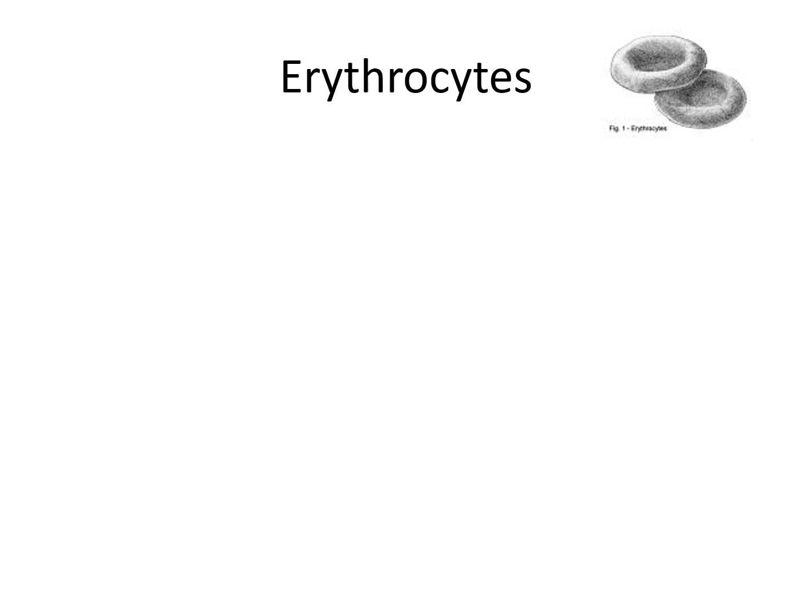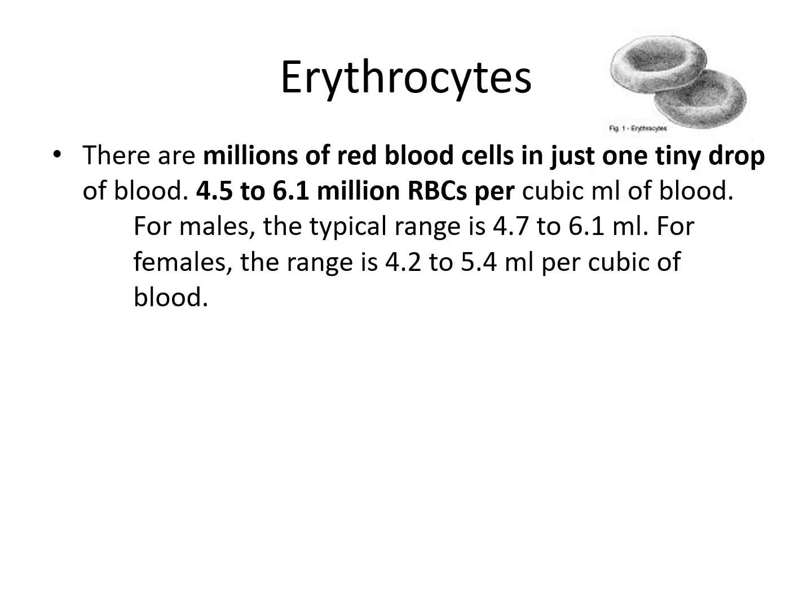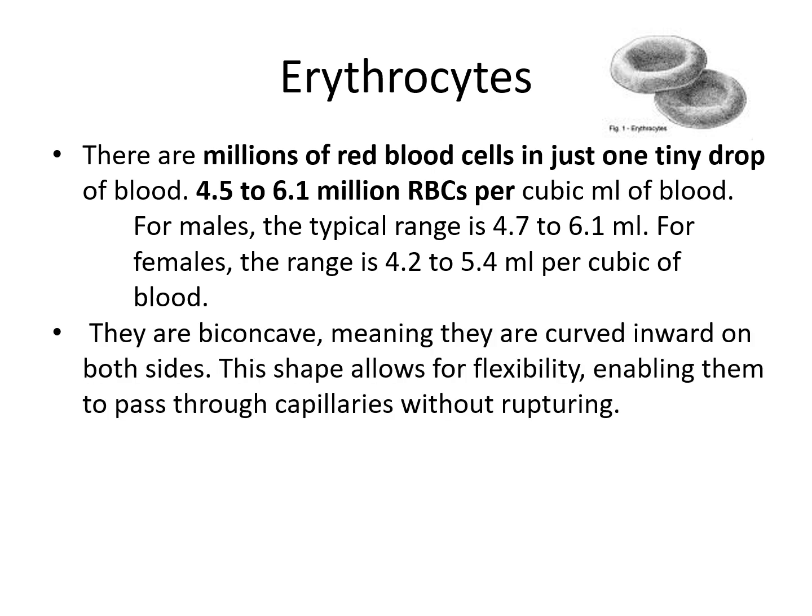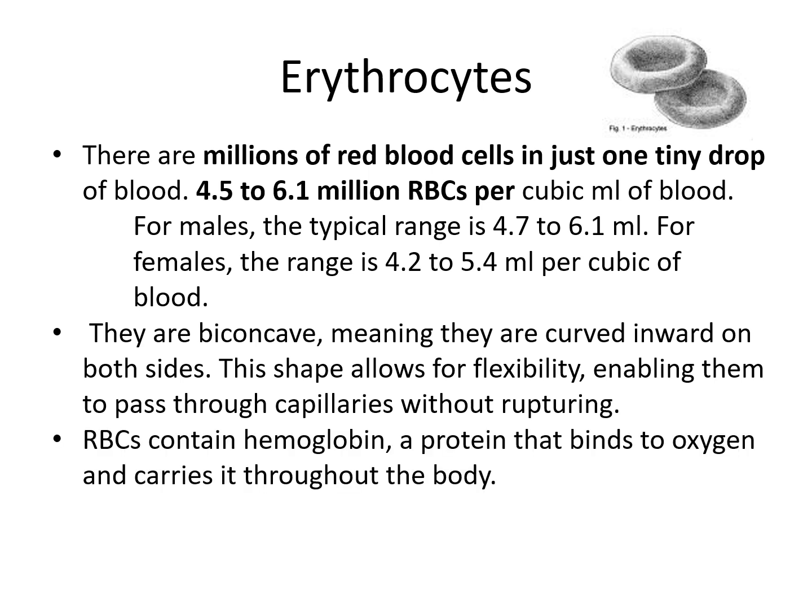There are millions of red blood cells in just one tiny drop of blood — 4.5 to 6.1 million RBCs per cubic milliliter of blood. For males, the typical range is 4.7 to 6.1 million per cubic milliliter. For females, the range is 4.2 to 5.4 million per cubic milliliter. RBCs are biconcave, meaning they are curved inward on both sides. This shape allows for flexibility, enabling them to pass through capillaries without rupturing. RBCs contain hemoglobin, a protein that binds to oxygen and carries it throughout the body.